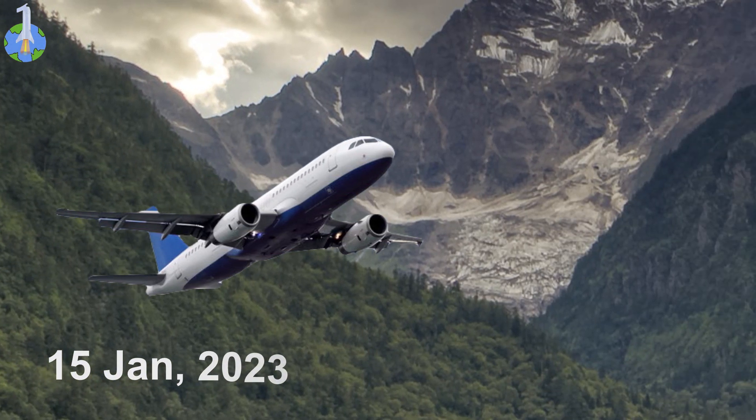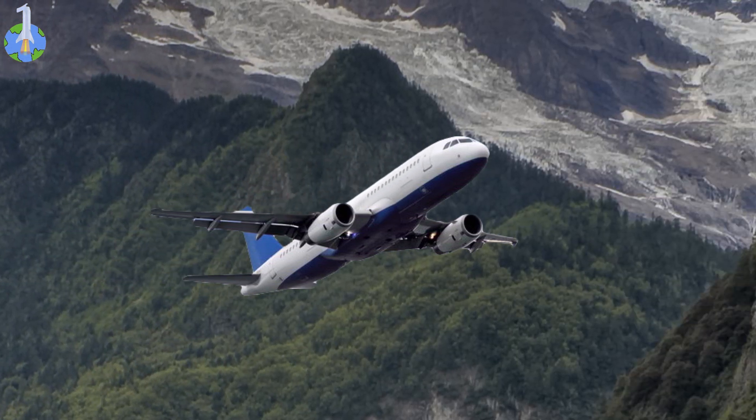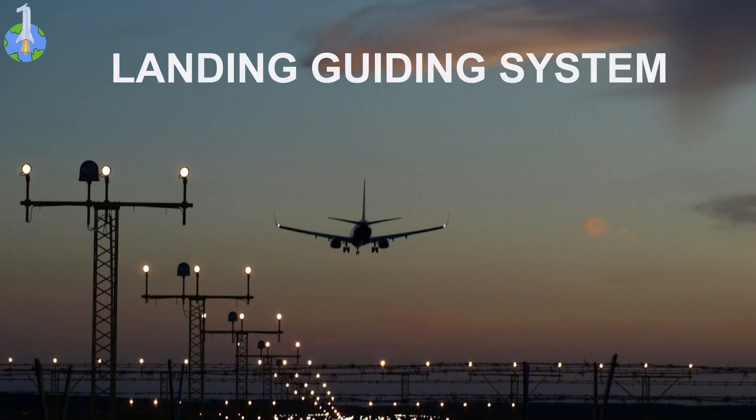On 15 January 2023, a Nepal-80 airplane with 72 passengers was scheduled to land but crashed minutes before. One of the officials revealed that the airport did not have a proper landing guiding system that helps the plane land safely on the runway.